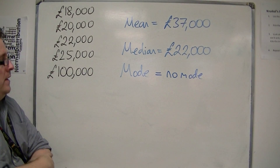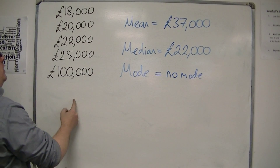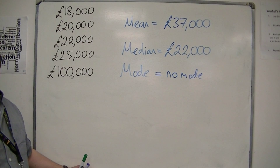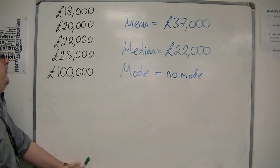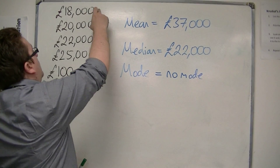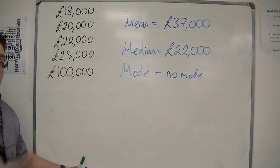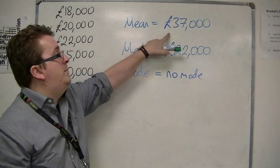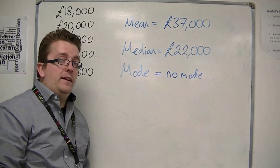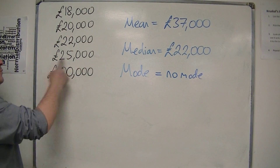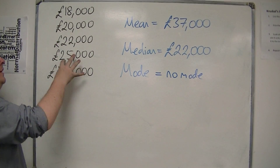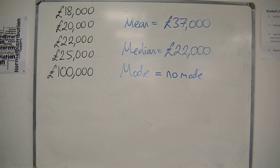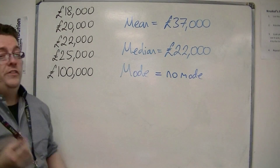Now, if you were saying that on average in this company people earned £37,000, that would be a little unfair, seeing as four people earn substantially less than £37,000. So this would certainly be a misleading figure to use — it has been skewed by the £100,000, which has made the mean larger.